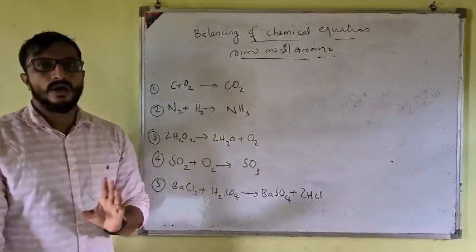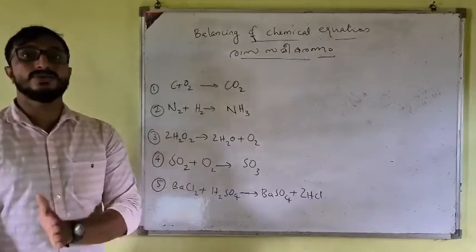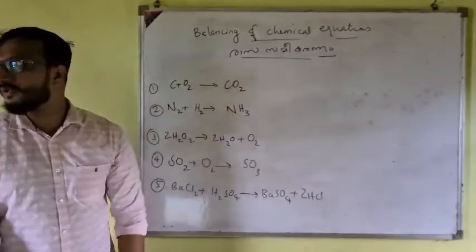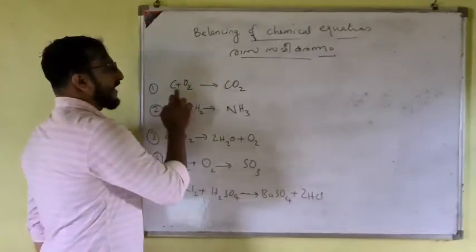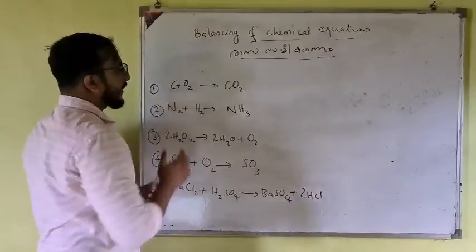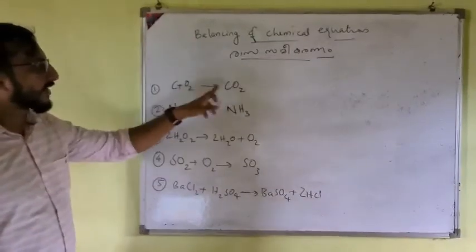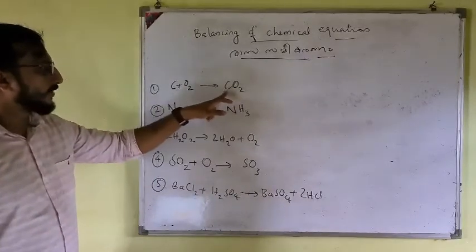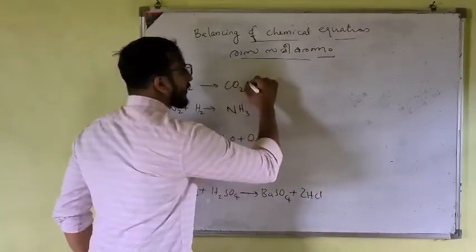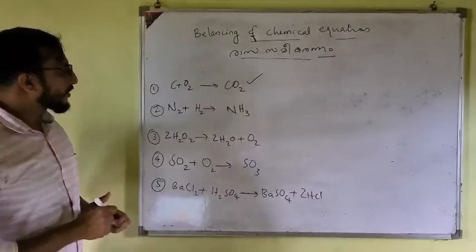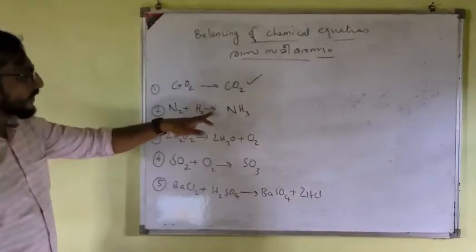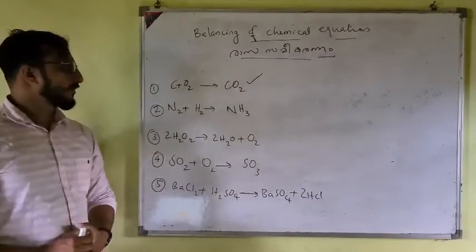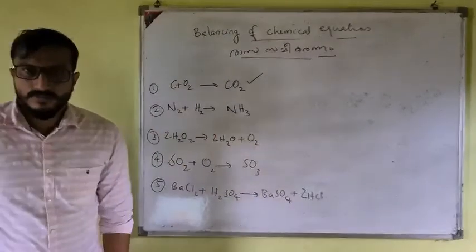Now, write the unbalanced equation into a balanced chemical equation. Example A: C + O2 gives CO2. The reactant side has 1 carbon and 2 oxygen; the product side has 1 carbon and 2 oxygen — this is balanced. Example B: N2 + H2 gives NH3. Here there are 2 hydrogen on the reactant side and 3 hydrogen in NH3 on the product side.